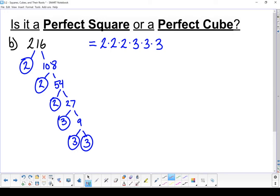But if I look at those factors, I've got nice neat groups of three. I've got three twos and three threes, and I've got no leftovers. It must be a perfect cube.